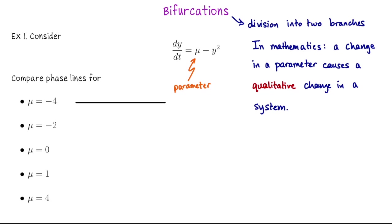Let's first suppose that mu equals negative four. If mu equals negative four, then our equilibrium solutions satisfy negative four minus y squared equals zero. In other words, y squared equals negative four, which doesn't have any real solutions. So if mu equals negative four, we don't have any equilibrium solutions. Since dy/dt equals negative four minus y squared would always be negative, our phase diagram is simply an arrow pointing to the left.